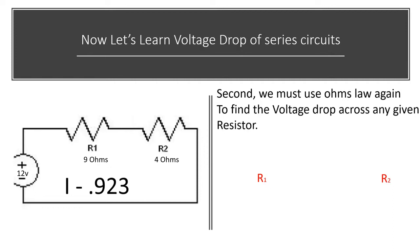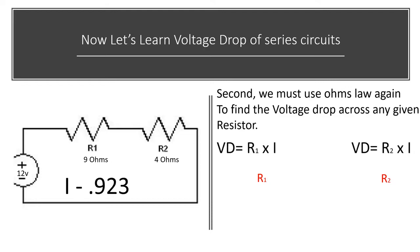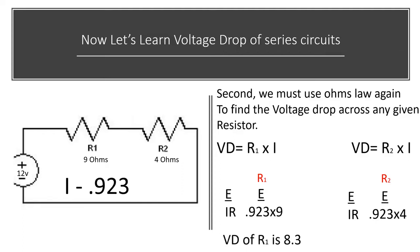Second, we must use Ohm's law again to find the voltage drop across any given resistor. Voltage drop is equal to R1 multiplied by I, and voltage drop of resistor two is equal to that resistor multiplied by I. E equals IR — just plug in the knowns. We know I and we know the resistance, so we just multiply those two together. The voltage drop of R1 is 8.3 and the voltage drop of R2 is 3.7.